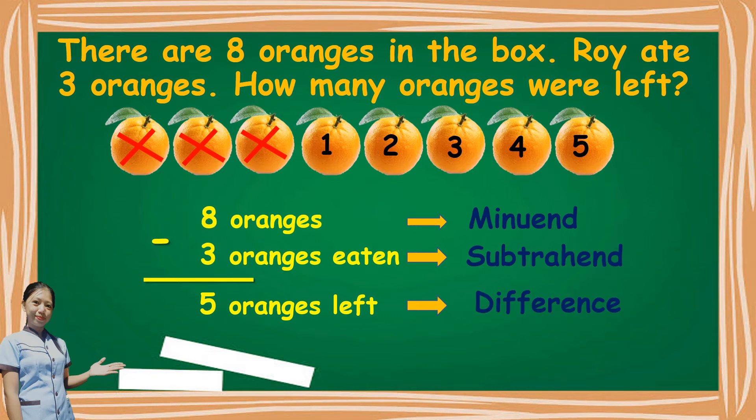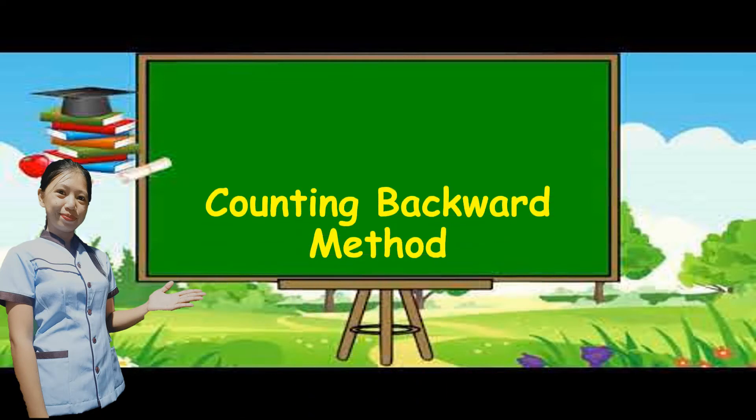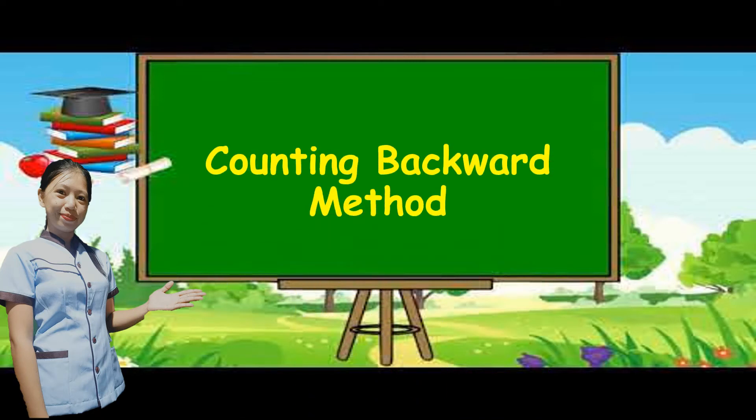This time, let us learn another method or way of subtracting numbers. The first method we learned was the crossing out method. Now, let us learn the second method — it is the counting backward method.